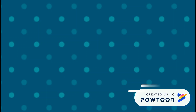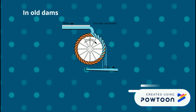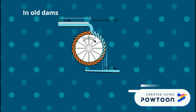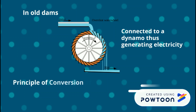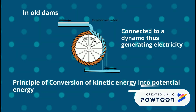A similar concept of torque is used in old times where the force of falling water rotates the water wheel. The water wheel was connected to a dynamo, thus generating electricity by the principle of conversion of kinetic energy into potential energy.